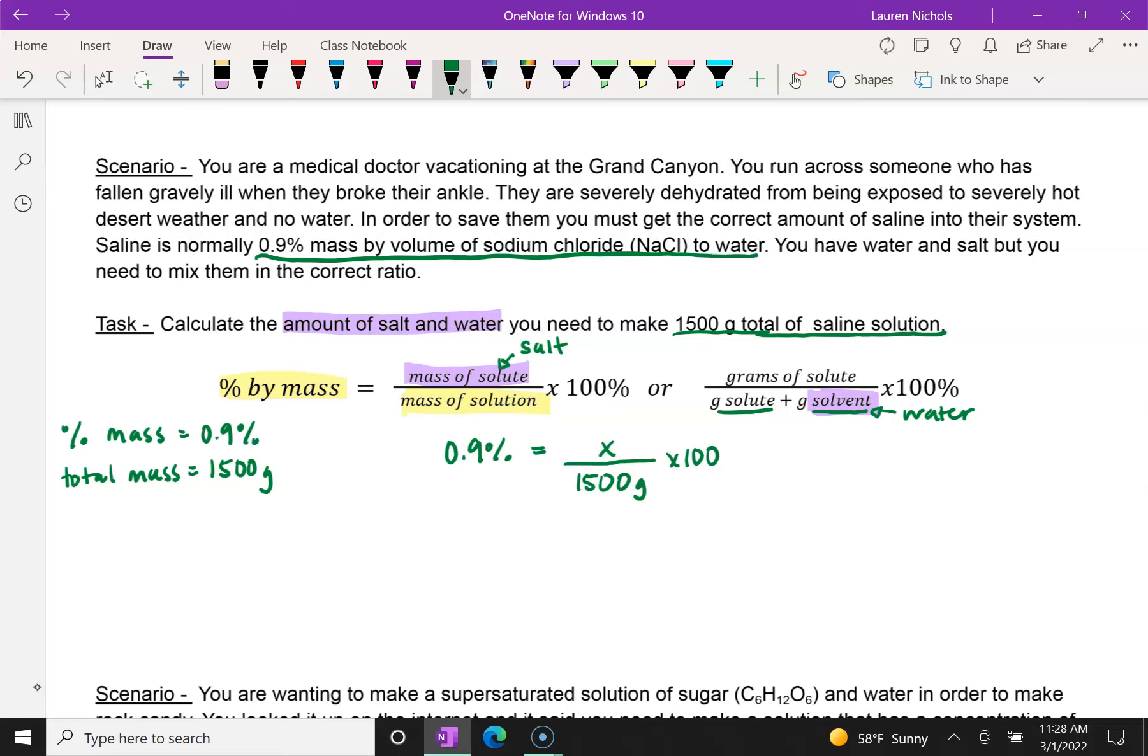Now, in order to get X by itself, we need to move some things over. So remember, to move something from one side of the equal sign to another, you do the opposite. So the first thing we want to look at is this times 100. To get rid of it, we'll do the opposite on both sides, so divide by 100, so that will go away. And 0.9% divided by 100 is 0.009, and that gets rid of your percent sign. And we know that's equal to X over 1500 grams. Now, since X is being divided by 1500, what you can do is multiply by 1500 grams on both sides to get X by itself. So this cancels out, and that tells us that X, or the mass of our solute, is 1500 times 0.009. That gives us 13.5 grams of salt, because remember, X is our mass of our solute.